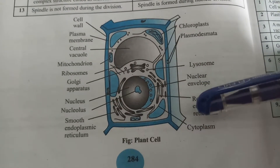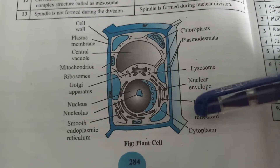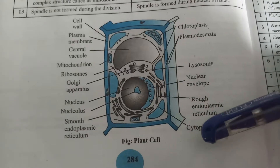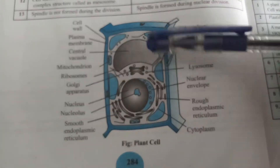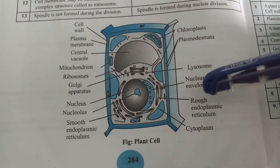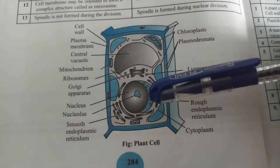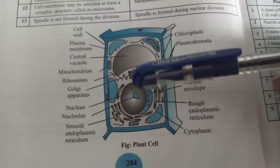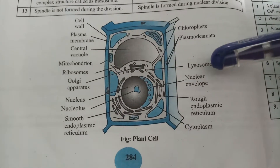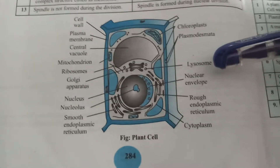The rough endoplasmic reticulum has ribosomes and helps with protein synthesis. Cytoplasm is the cytosol along with the cell organelles. The nuclear envelope is the outer and inner membrane of the nucleus.